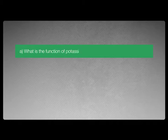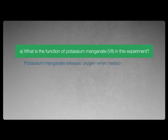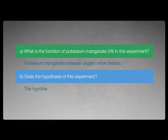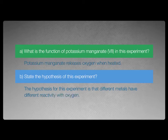Question A: What is the function of potassium manganate(VII) in this experiment? Potassium manganate(VII) releases oxygen when heated. Question B: State the hypothesis in this experiment. The hypothesis for this experiment is that different metals have different reactivity with oxygen.